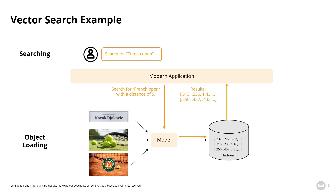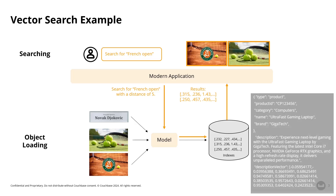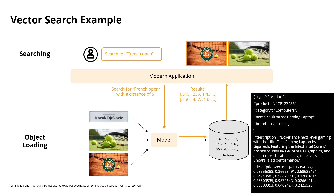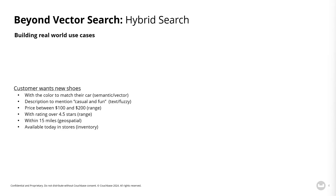In Couchbase, a vector or multiple vectors — unlike MongoDB — can be stored within a JSON document. We've simply extended our current search service to now include vectors, so customers can benefit from our proven, highly scalable architecture. This eliminates the need for a separate vector database and makes queries run much faster.